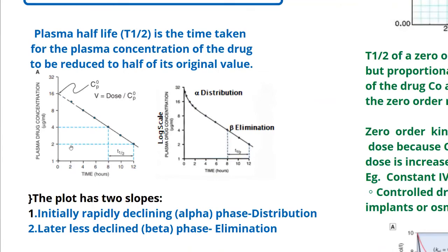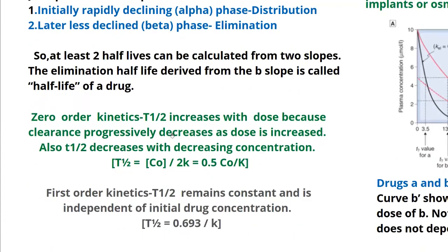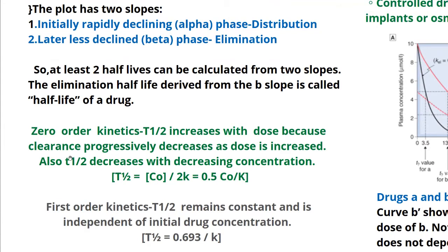This is the one that follows first order kinetics, but not every drug follows first order kinetics. Some drugs follow zero order kinetics, where t½ increases with dose because clearance progressively decreases as the dose is increased. Zero order kinetics is seen with alcohol and with any drugs given in toxic concentrations. When a way too high dose is given, even a drug that would normally follow first order kinetics will jump to zero order kinetics.